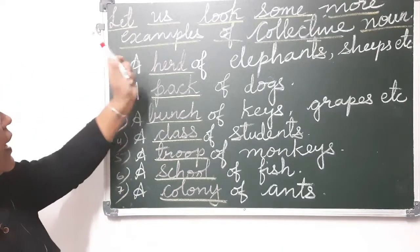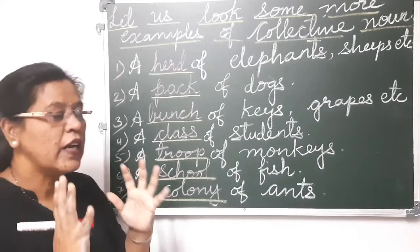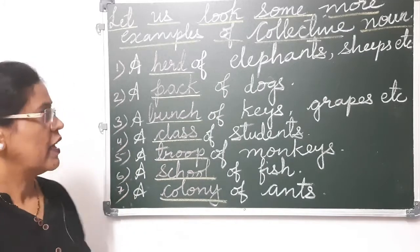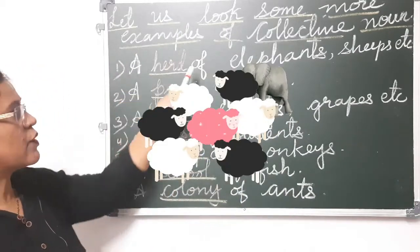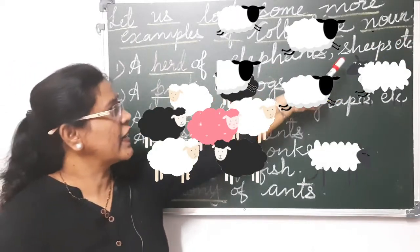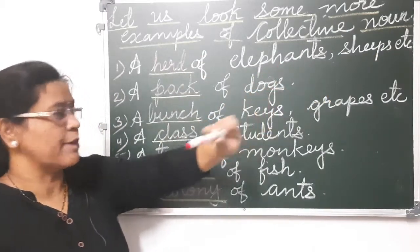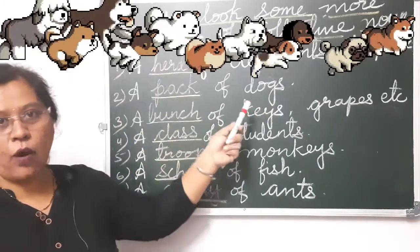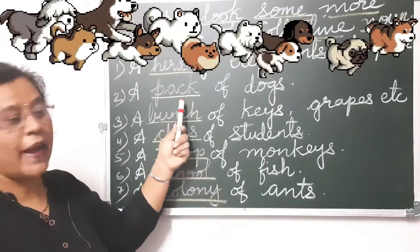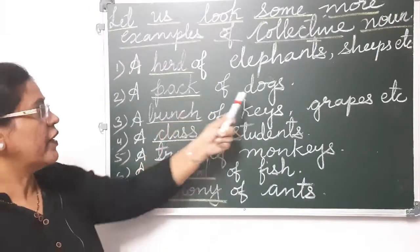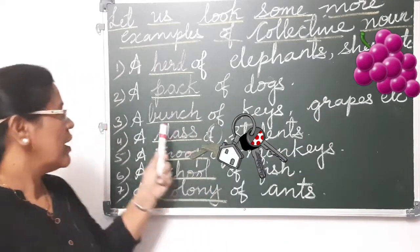Let us look at some more examples of collective nouns. A herd of elephants or sheep — 'herd' refers to a group of elephants or sheep, so it is a collective noun. A pack of dogs — several dogs together, a group of dogs, is called a pack. So pack is the collective noun for dogs. A bunch of keys or grapes — bunch refers to the group of keys or grapes, so it is a collective noun.